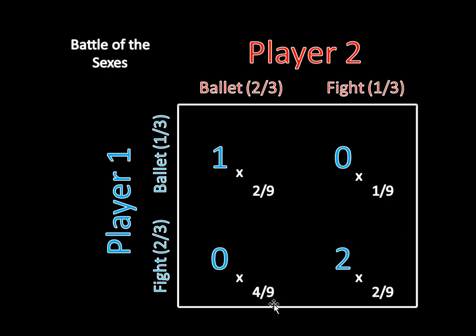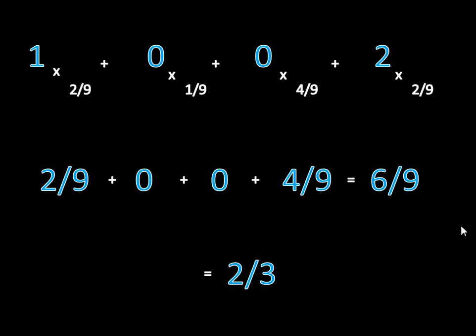Likewise, the four-ninths is the probability player one goes to the fight — two-thirds — times the probability that player two goes to the ballet — two-thirds — so four-ninths. The blue numbers on screen are the payoffs for each outcome. If both players end up at the ballet, player one gets a payoff of one. If both end up at the fight, player one gets two, and otherwise zero. We multiply utilities for each outcome by the probability that outcome occurs, then add them all together: two-ninths plus zero plus zero plus four-ninths equals six-ninths, which reduces to two-thirds. This two-thirds is the payoff in the mixed strategy Nash Equilibrium for player one.